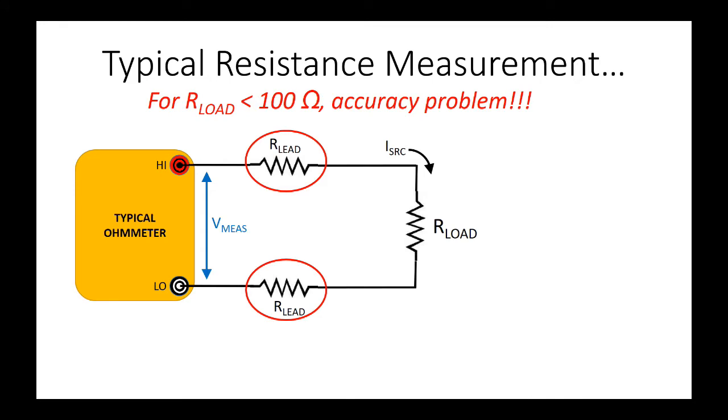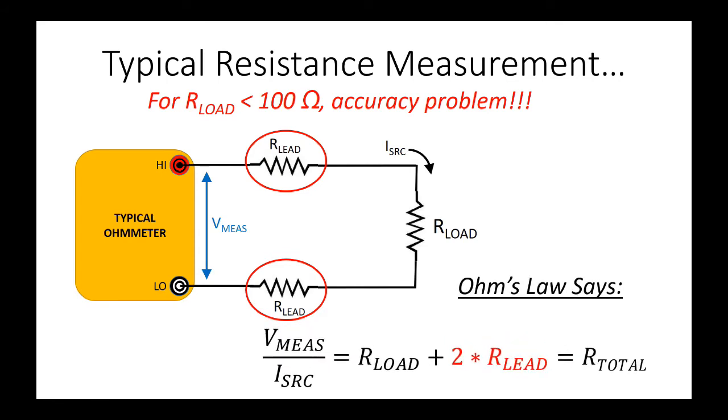Your test leads are wires with very low resistance values. Because the voltage measurement is taken at the terminals of the multimeter, these very low resistance values of your test leads are factored into Ohm's law and offset the measured total resistance.